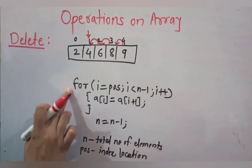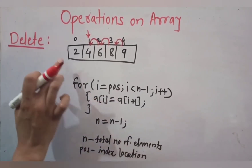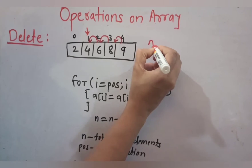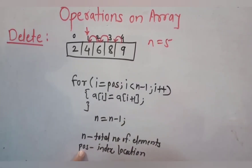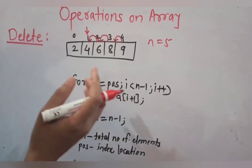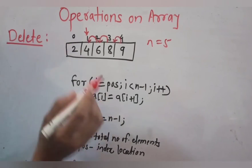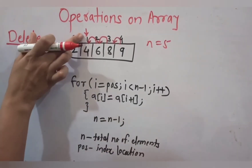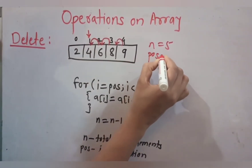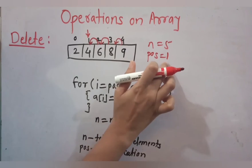Now let's look at the code. The variables used are: array `a` as the array name, `n` as the total number of elements (initially n=5), and `position` as the variable holding the index location from which we want to delete. In this case the position is 1, because we want to delete from the second location but the index is 1.